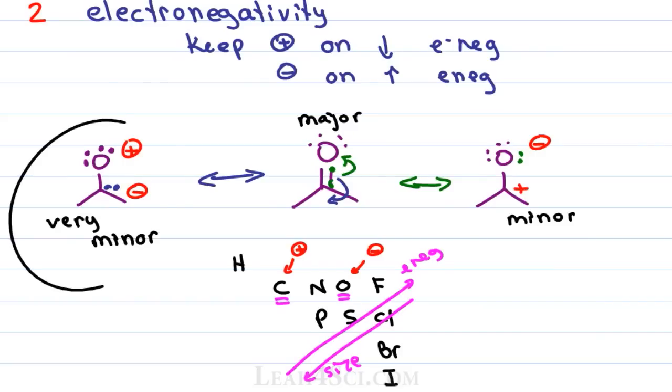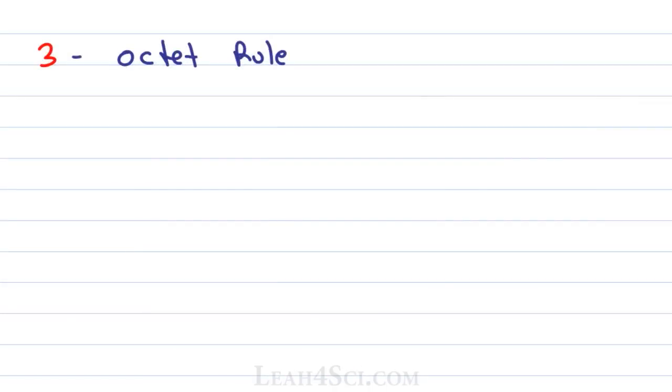Not only does this structure have a separation of charge in the wrong direction, we're also violating the next rule which is to pay attention to your octets. The octet rule tells you that an atom wants to have 8 electrons in its valence shell through lone pairs or bonds. If you set up a resonance structure where you're violating that octet by putting in too many electrons if it can't handle it or taking away electrons so that it does not have a complete octet, it won't be stable.